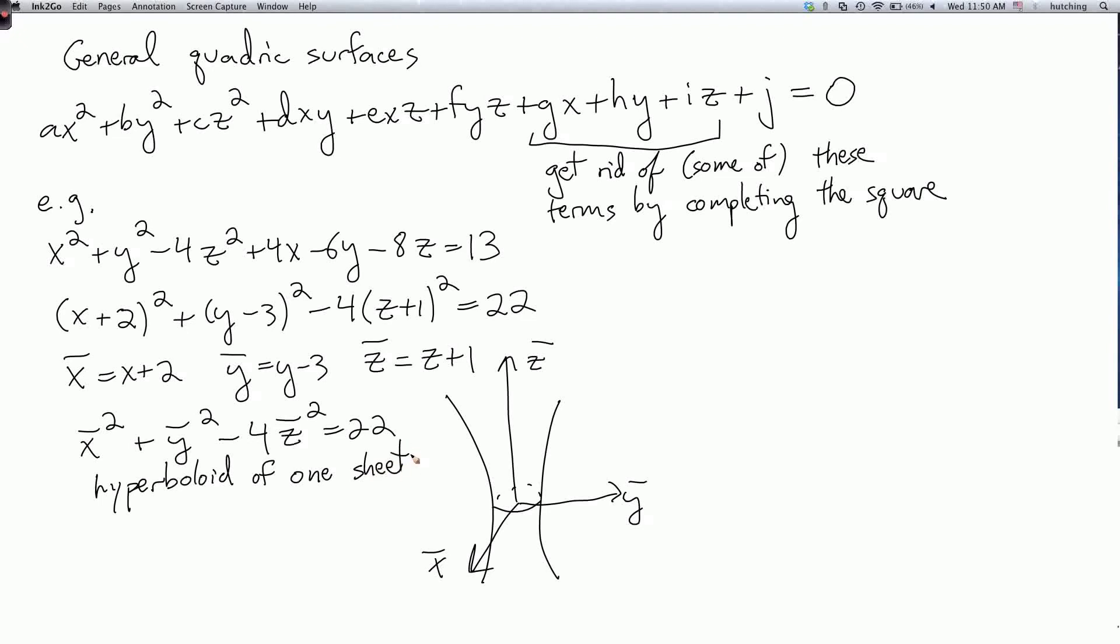But we want to draw the surface in the original x, y, and z coordinates. How do we do that? Well, so the x bar, y bar, and z bar axes are different from the x, y, and z axes. They're translated.